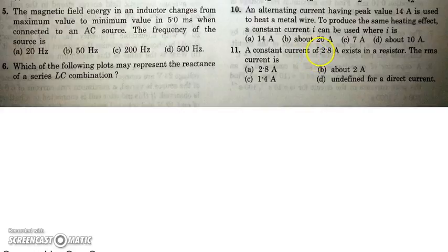In the next question, there is a constant current of 2.8 Ampere that exists in a resistance. What is the RMS of that current? If something is constant, then we can say its average, its RMS, its mean, mode, median, whatever mathematical averages we can take, they will all be same equal to the value. So as the current is constant, we can say the RMS will also be the same value 2.8. Thank you.